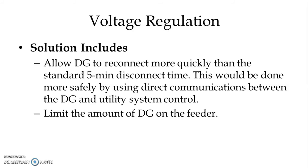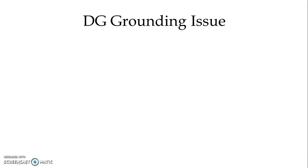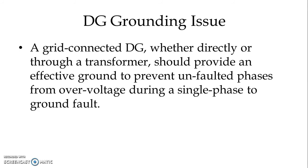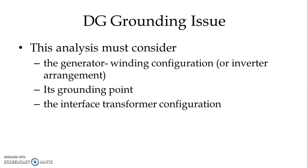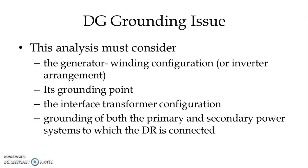Another solution is to limit the amount of DG on the feeder. We have another issue, and that is DG grounding. A grid-connected distributed generator, whether directly or through a transformer, should provide an effective ground to prevent unfaulted phases from overvoltage during a single-phase to ground fault. This analysis must consider the generator winding configuration or inverter arrangement and its grounding point, as well as the interface transformer configuration and grounding of both the primary and secondary power systems to which the distributed resource is connected.